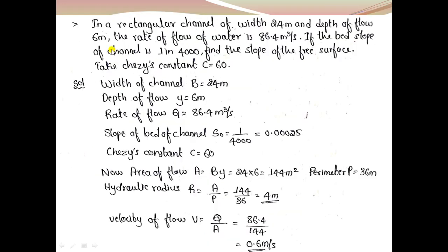Problem 2: In a rectangle channel of width 24 meters and depth of flow 6 meters, the rate of flow is 86.4 m³/s. The bed slope is 1 in 4000. We need to find the slope of the free surface.